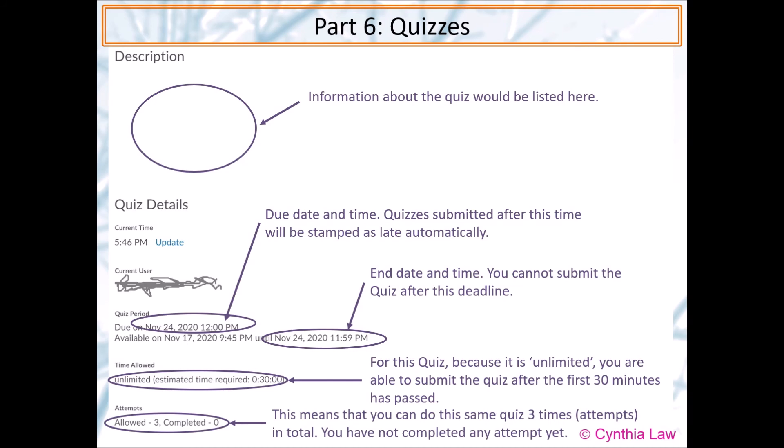Attempts. This means that you can do the same quiz three times in total. Completed says zero. It means you have not submitted any attempts yet. So out of the three attempts, you have done zero so far.